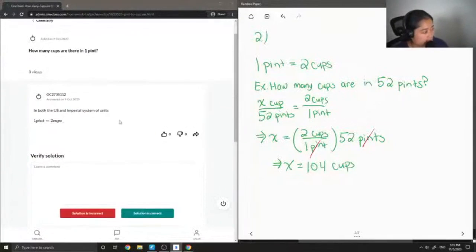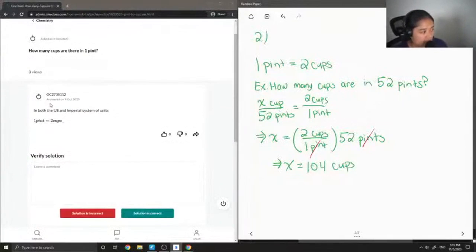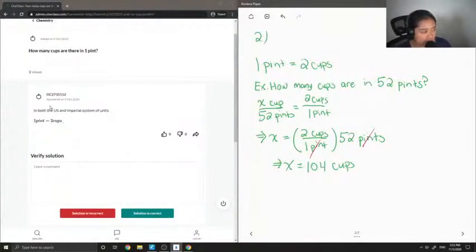So let's see what the junior tutor said. In both the US and imperial system of units, 1 pint is equal to 2 cups.